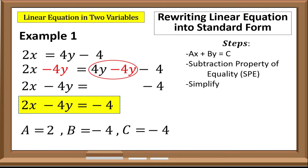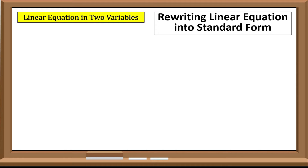Take note: we only need to get the numerical coefficient of the equation when identifying the values of a, b, and c. Example number two: y equals negative 4x plus 12. Our goal is to arrange this equation into standard form.